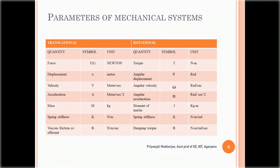These are the parameters of the mechanical system. For translational systems, the quantities, symbols, and units are shown. For example, in the translational system we use force with symbol F and units Newtons, whereas in the rotational system we use torque with symbol T and units Newton-meters. These are the different parameters used in both translational and rotational systems.